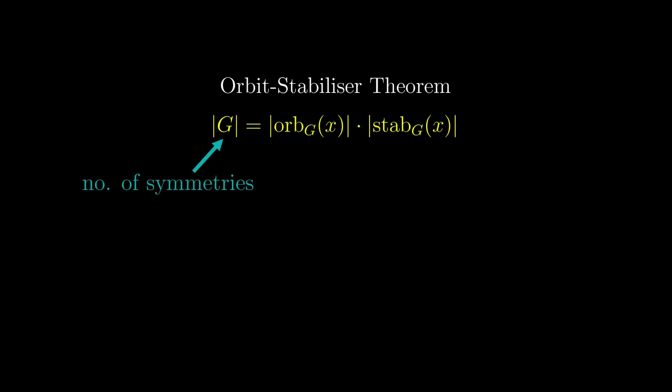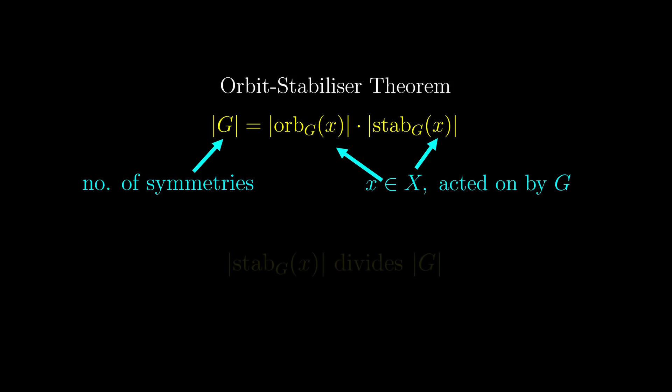In the last video, we talked about the orbit stabiliser theorem, which states that the total number of symmetries is the product of the sizes of the orbit and stabiliser of x, where x is any element in the set x which the symmetries act on. One deduction that we can make is that the size of the stabiliser always divides the total number of symmetries.